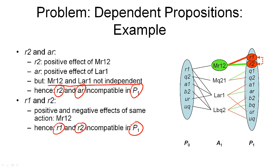We have seen two reasons why two propositions in a proposition layer may be incompatible. The first was that two dependent actions are the only producers of the two propositions — then the two propositions must also be dependent. The second reason was that a single action had the two propositions as positive and negative effects, which again means they are incompatible in that proposition layer.